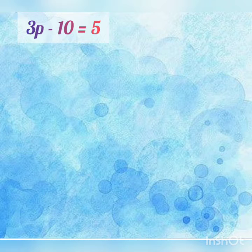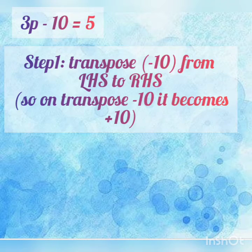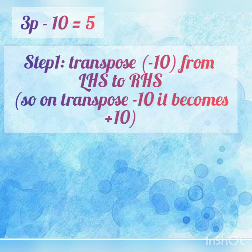3p minus 10 is equal to 5. This is the transposing method, so we will write Step 1: transpose minus 10 from LHS to RHS. We are shifting this minus 10 from LHS to RHS, so it becomes plus. On transposing minus 10, it becomes positive 10.